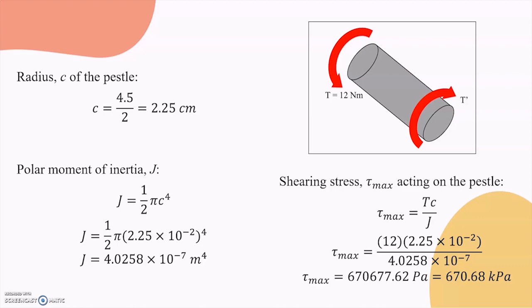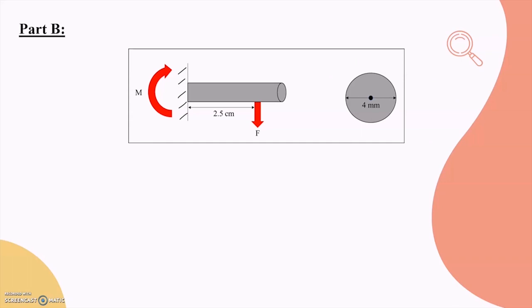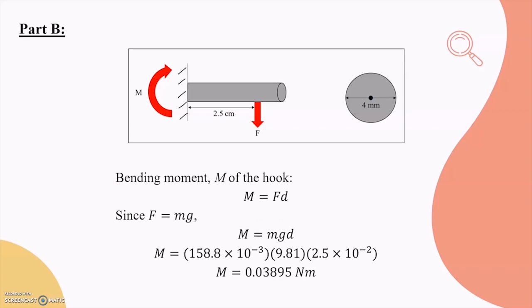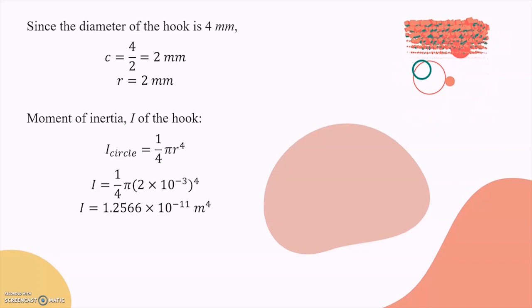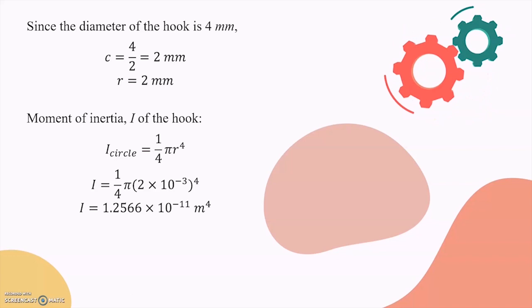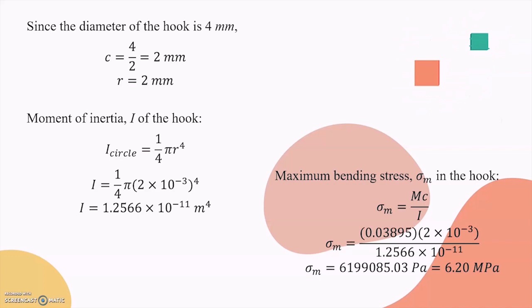Moving on to Part B, we are to identify the maximum normal stress of the hook due to bending. We can first solve for the bending moment as well as the moment of inertia of the hook. For bending moment, M equals to Ft. Since F equals to mg, by substituting all the values, the moment should be equal to 0.03895 newton meters. By knowing that the diameter of the hook is 4 mm, we get both c and r of the hook is 2 mm. We can now calculate the moment of inertia by using the formula I equals to 1 over 4 pi r to the power of 4, and I obtained is 1.2566 times 10 to the power of negative 11 meter to the power of 4. Next, we can solve for the maximum bending stress in the hook by using the formula sigma m equals to mc over I. By substituting all the values, we get sigma n equals to 6.20 megapascals.